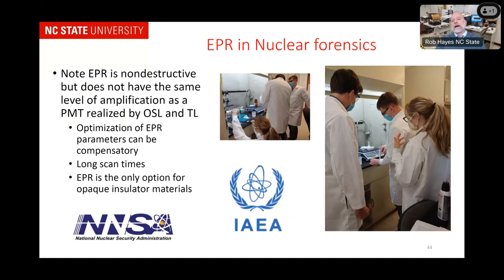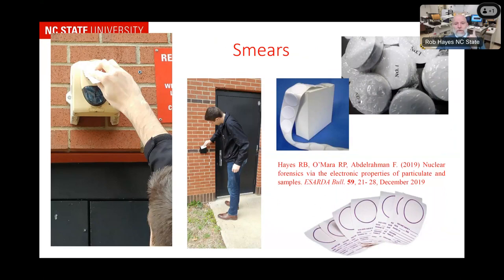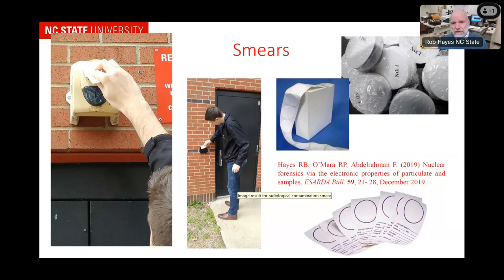Now for the exciting stuff: EPR and nuclear forensics. As a general rule, using all of these things I've shown you, there isn't anywhere that you can go and pick up something that won't give actionable intelligence. It can be a commercial dosimeter — that's easy — but because of everything I've shown, you're pretty much always going to be able to find something somewhere. You're always going to have brick, but you might not be allowed to take a brick sample. However, you are going to be allowed to take a smear or an air sample.